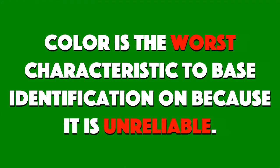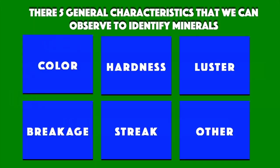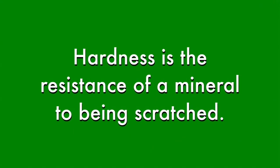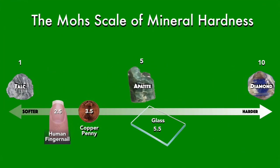That really tells us that color probably isn't a good test to rely on. For instance, this is quartz, and quartz comes in many different colors. If I was trying to identify quartz just based on its color, it would be very hard to do because it's varied. These are all green minerals, but they're all different minerals, which tells you that using color is not going to be reliable. Color is the worst characteristic to base any mineral identification on because it's unreliable — there's not enough information. You can use it in conjunction with other tests, but just keep in mind that looking at the color of a mineral alone is not going to tell you what it is.